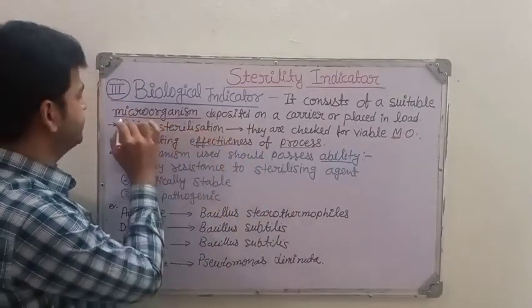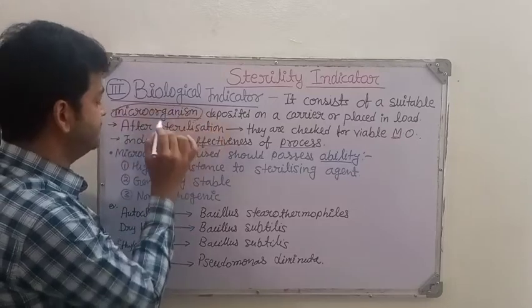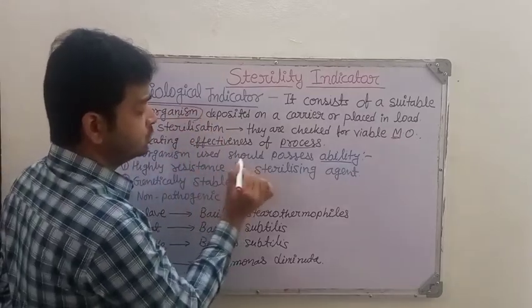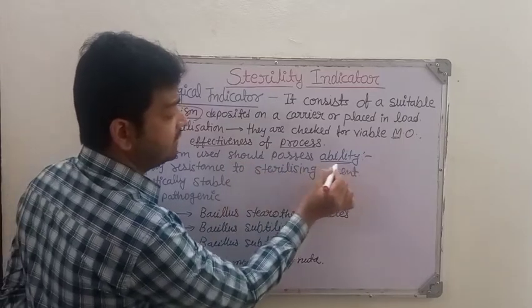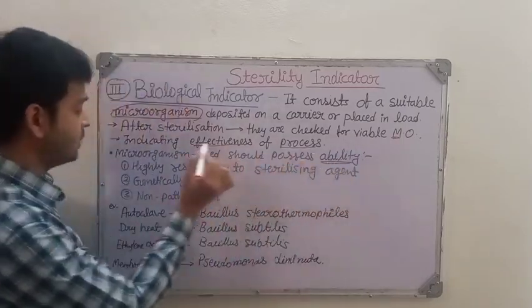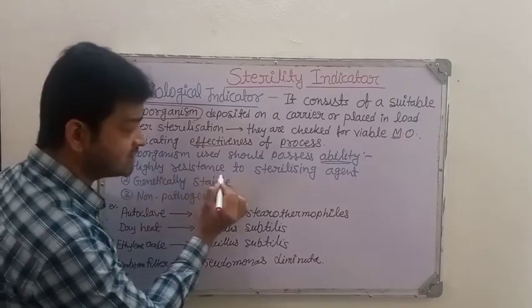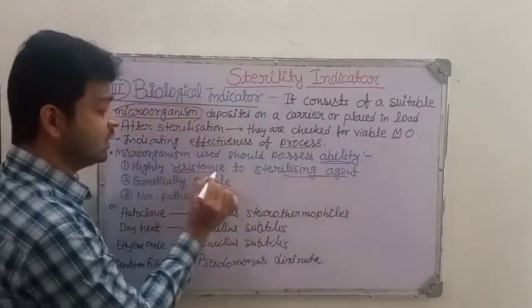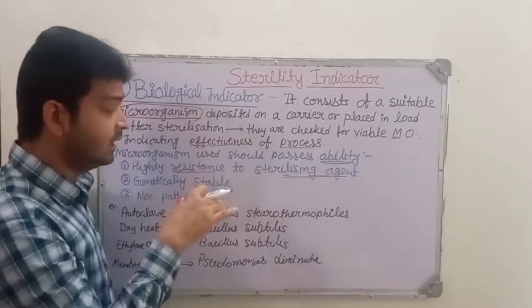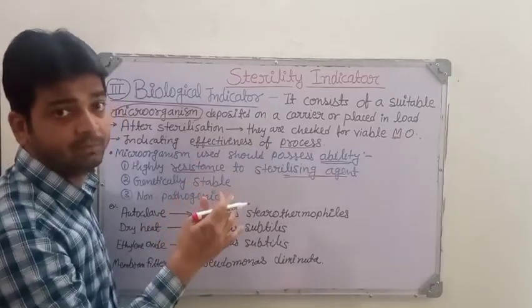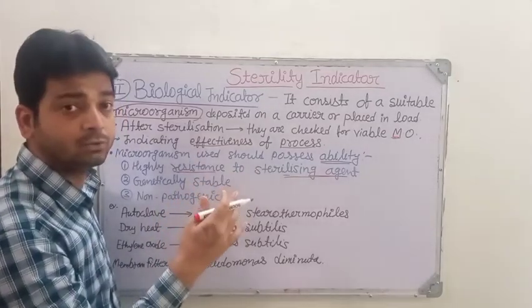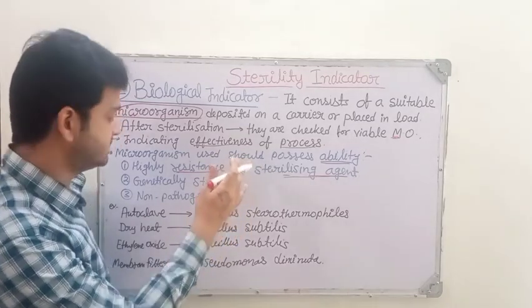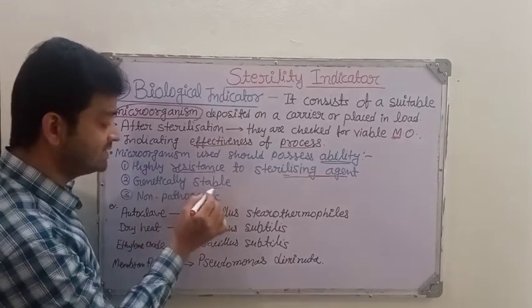The microorganisms which we are using as a biological indicator should possess certain abilities. What ability should they have? They should be highly resistant to the sterilizing agent. If they are not resistant, they may die and we will not be able to recover them or know what happened during sterilization. Also, genetically they should be stable and should not be manipulated.